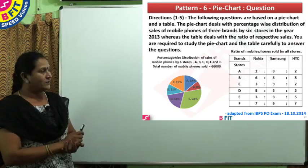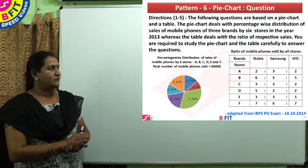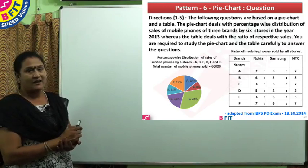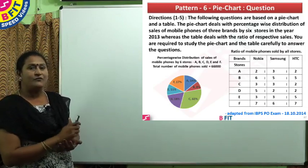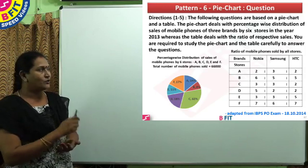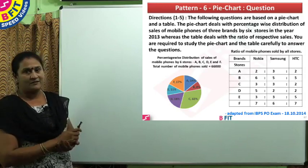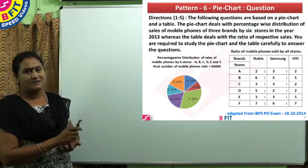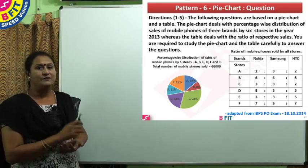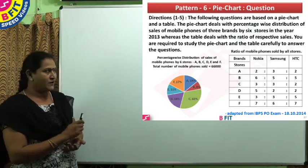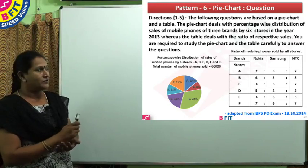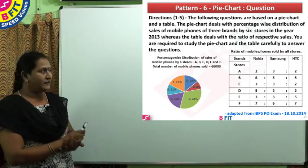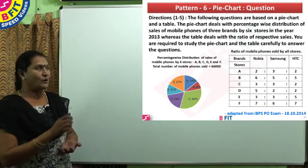Each store sells three brands of phones: Nokia, Samsung, and HTC. There is an adjacent table where the ratio of phones sold by each store across these three brands is given. For example, store A sells Nokia, Samsung, and HTC in the ratio 2:3:2. Correspondingly, ratios are given for each store. Using this detailed data, we will answer the following questions.